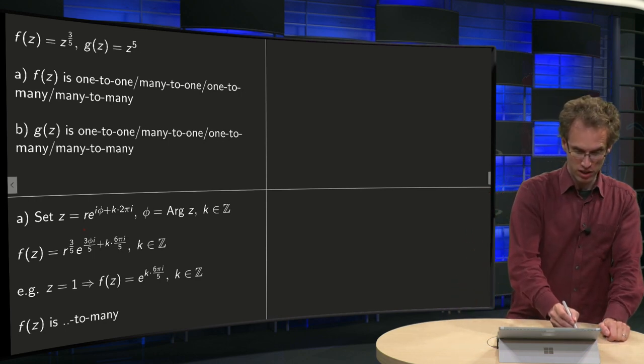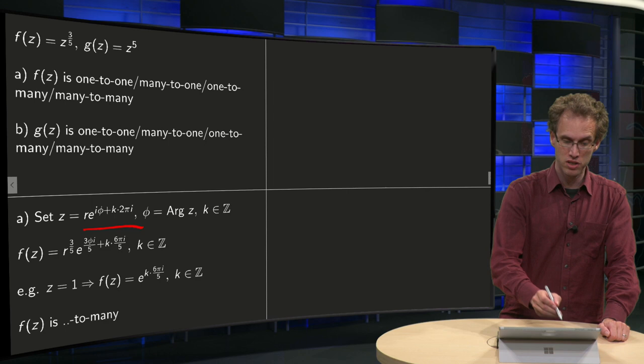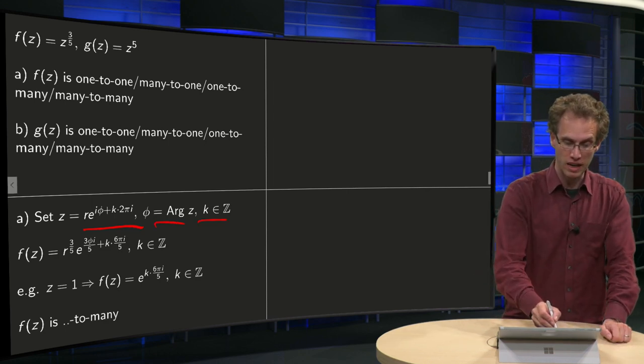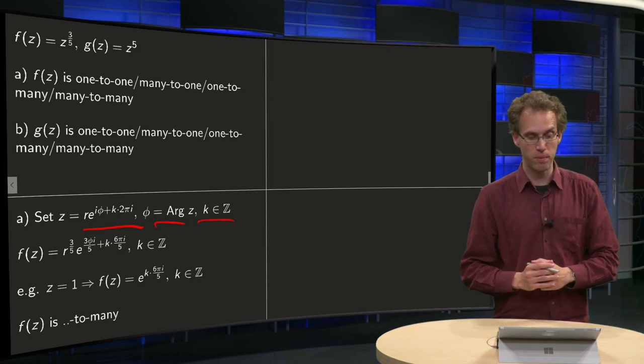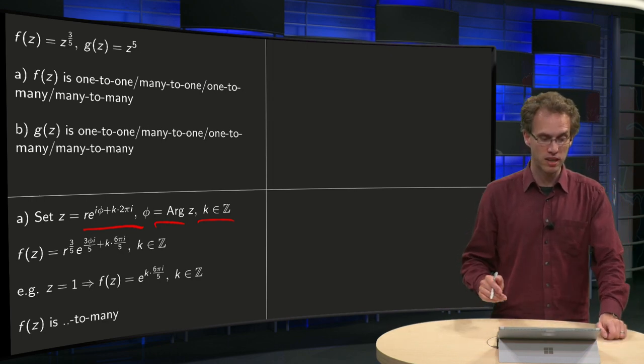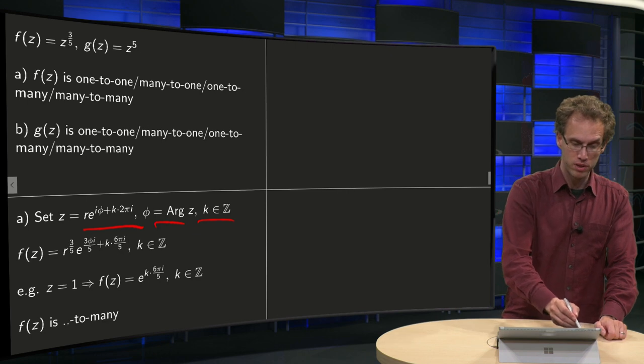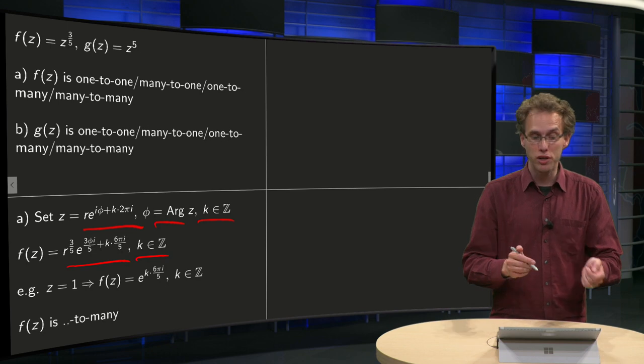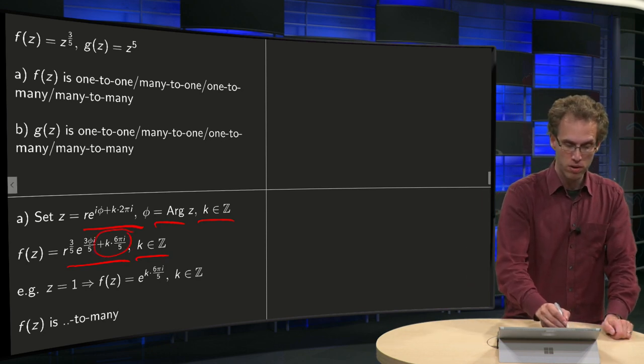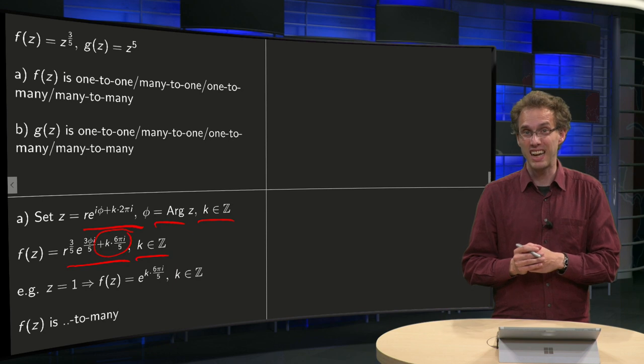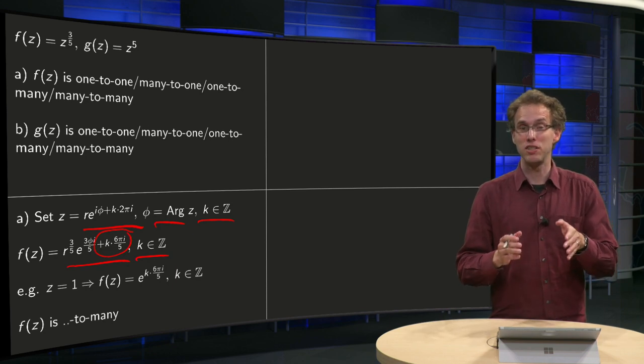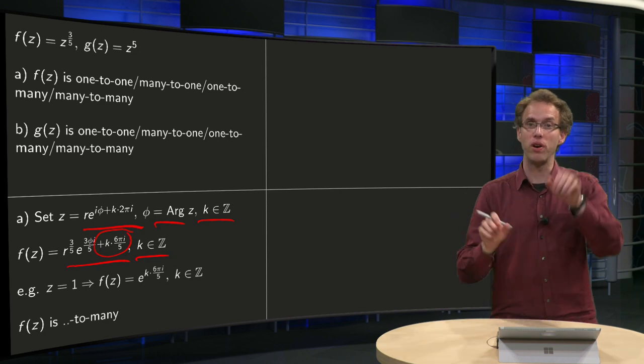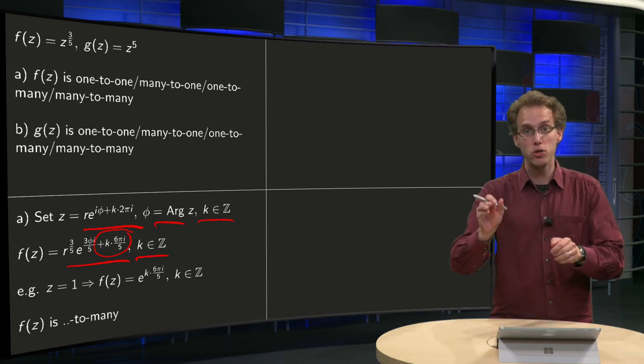If we set z in polar form like this, phi argument of z, so the principal value, k in Z, any number in Z, then we can compute the image f where k is still in Z. And now we see that the answer depends over here on which value of k you are taking exactly. So that means that with one value of z you get more different answers, so the function is to many.